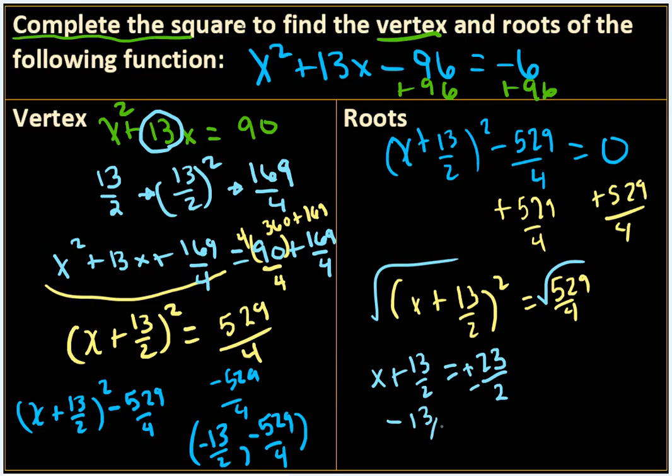So now I subtract 13 over 2 from both sides. We're going to get 23 minus 13, which is 10 over 2, which is 5.